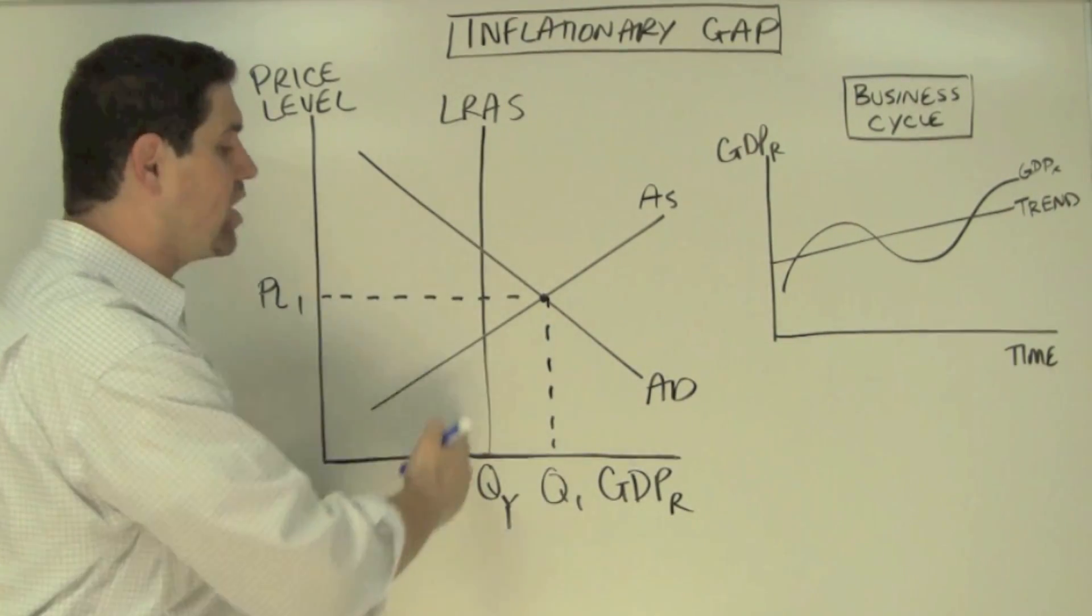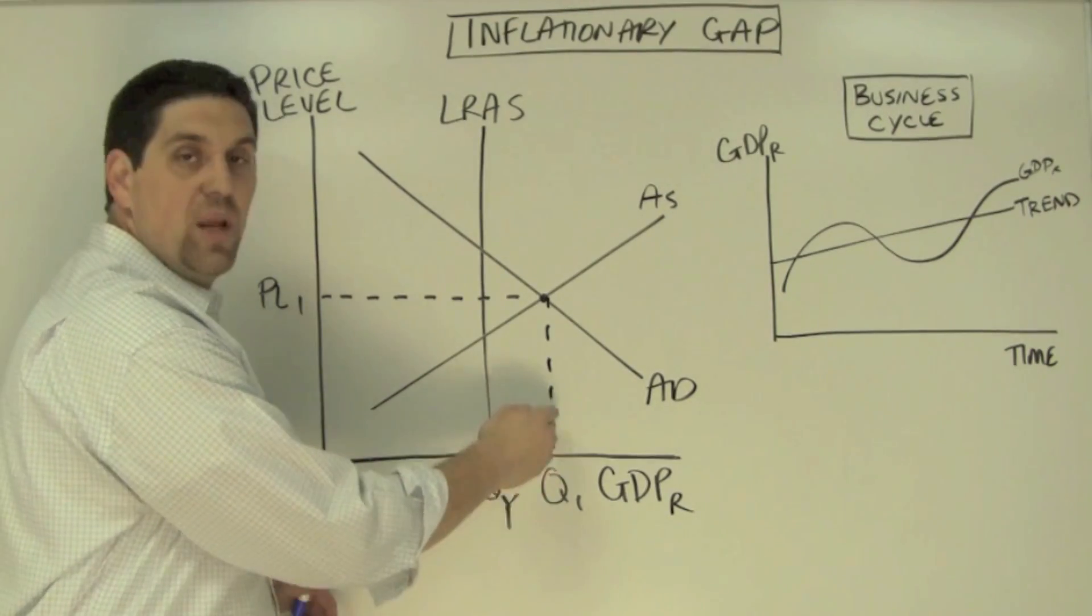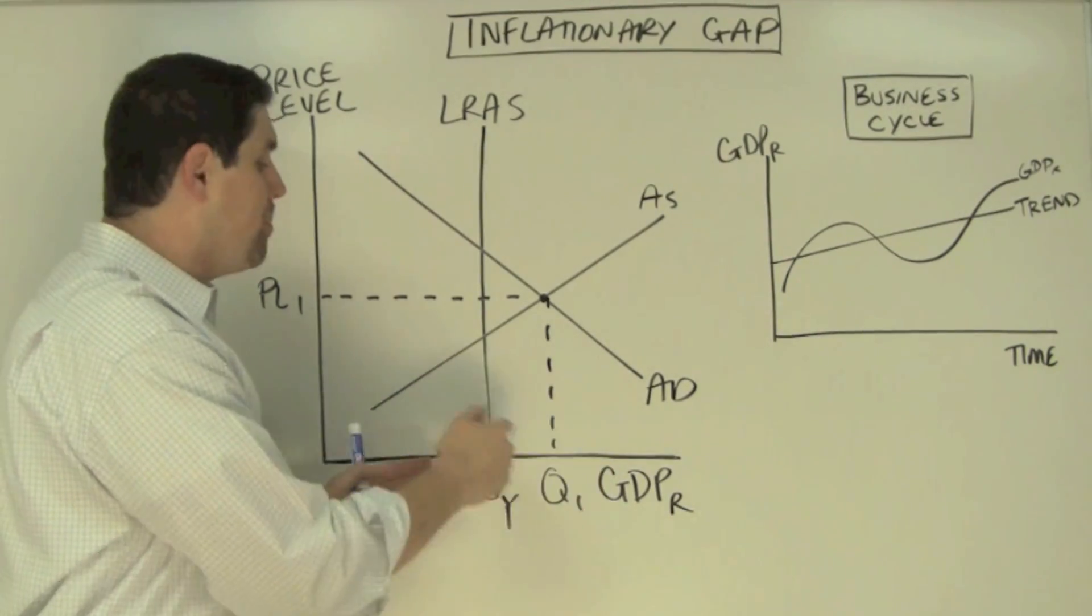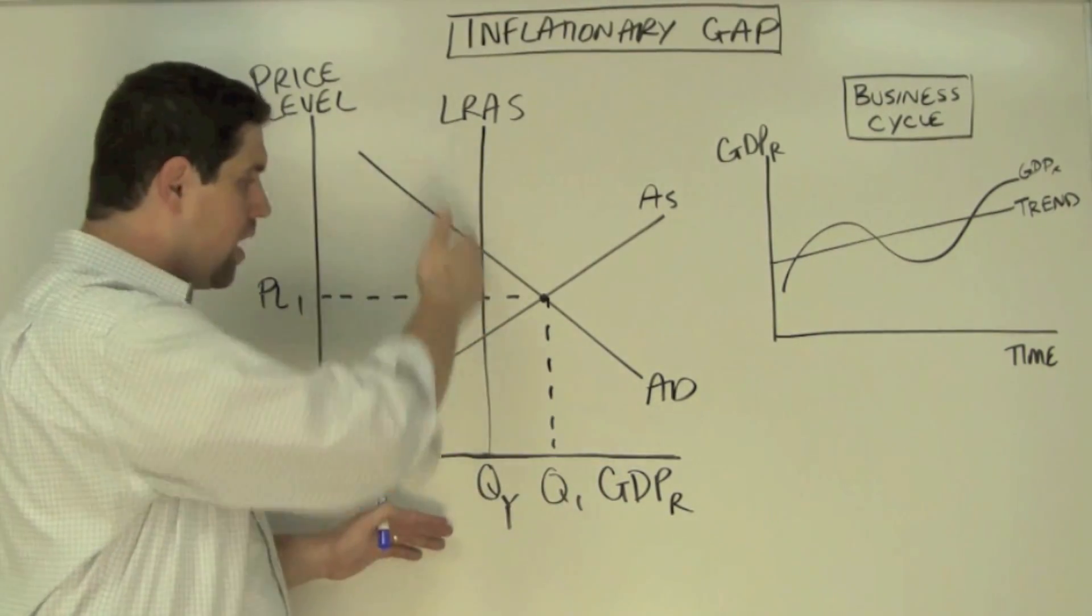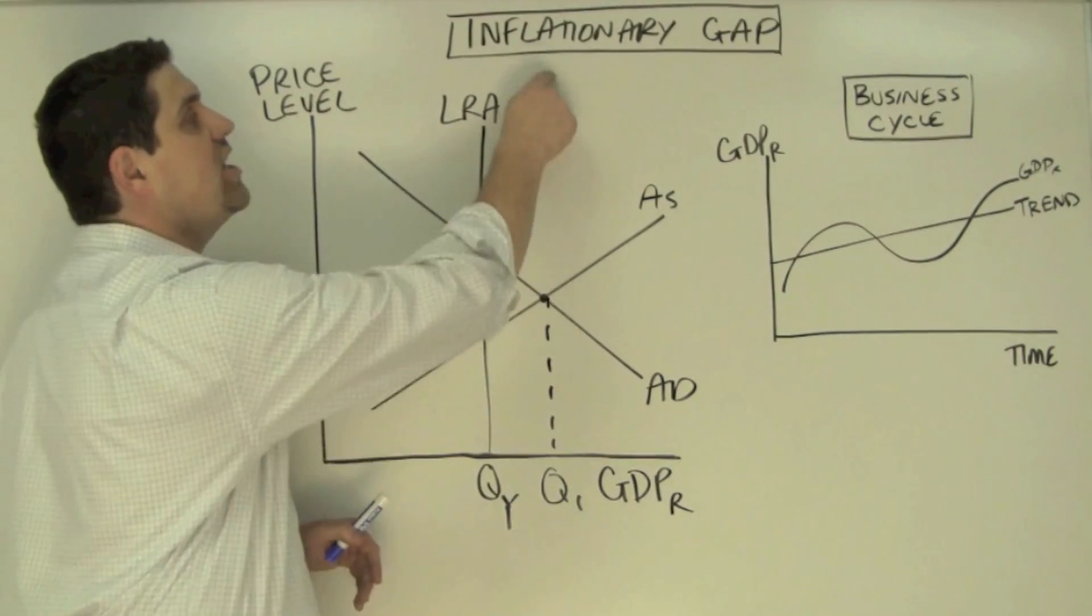The location of the long run aggregate supply curve is super important. If the actual GDP we're producing is beyond or past the full employment long run GDP, then we have an inflationary gap.